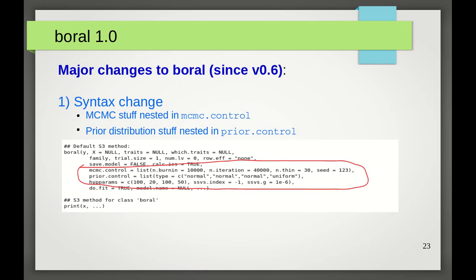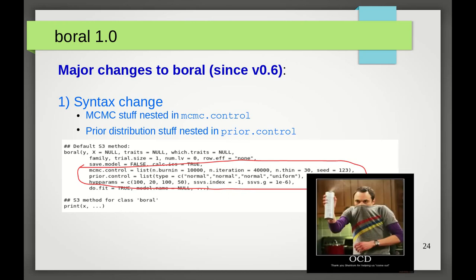Number one. Syntax change. As of boral 1.0, some of the way arguments are utilised in the main boral function have changed. In particular, stuff related to MCMC iterations is now nested in an MCMC.control argument. And similarly, stuff related to prior distributions is now nested in a prior.control argument. If you've used boral before, then you'll likely find this change annoying and I do apologise. However, I've done this so that it's now consistent with many other regression functions in R like GLM, GAM, and GLMER. Plus some OCD with regards to these things.